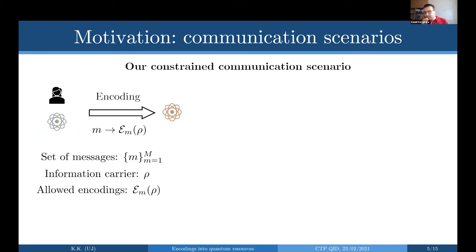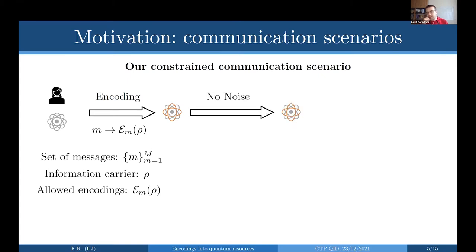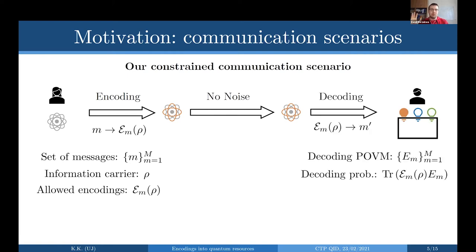Now we look at a slightly modified communication scenario. Alice still wants to send one of M messages to Bob, but she can't prepare all possible quantum states. Instead, she's constrained to performing some operations on an information carrier state rho — this is the state on which you record your information. She can perform some CPTP maps on it before sending, and those encodings will be somehow constrained. For simplicity, we assume there is no noise to focus on the important aspects.